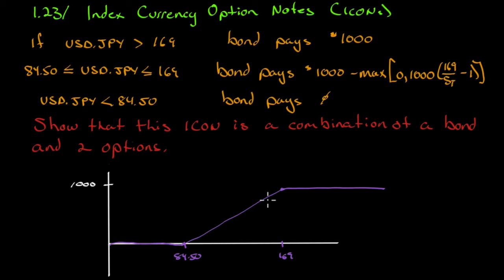Now here's the hard part, and it should be very difficult to answer. Even so, there was not enough information in chapter 1 for you to really get this. There is an early step that, if you don't use it, makes it very difficult. The task is to show that this ICON is a combination of a bond and two options.